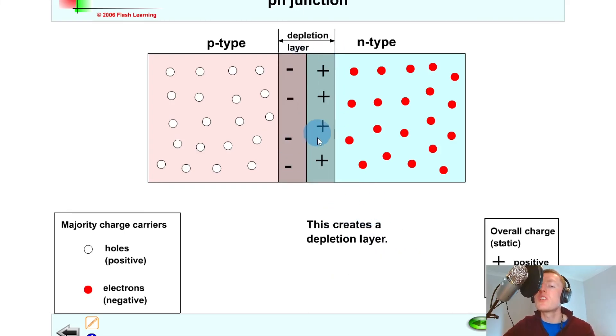This process continues until static charge prevents further drift across the junction. This creates the depletion layer or depletion region, where we've got this potential difference or potential barrier set up in the middle. This is going to prevent any further charge from moving across the depletion region, unless you do something to the material.